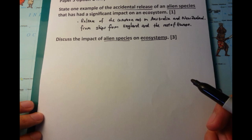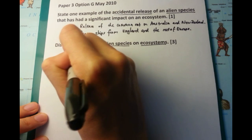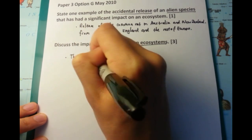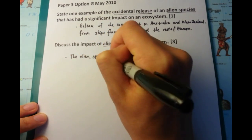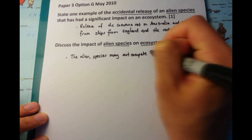Now, the next question is worth three marks, and it's a bit trickier. Discuss the impact of alien species on ecosystems. And the way I go about this one is just I think about the common rat and its effect on the native species of Australia.